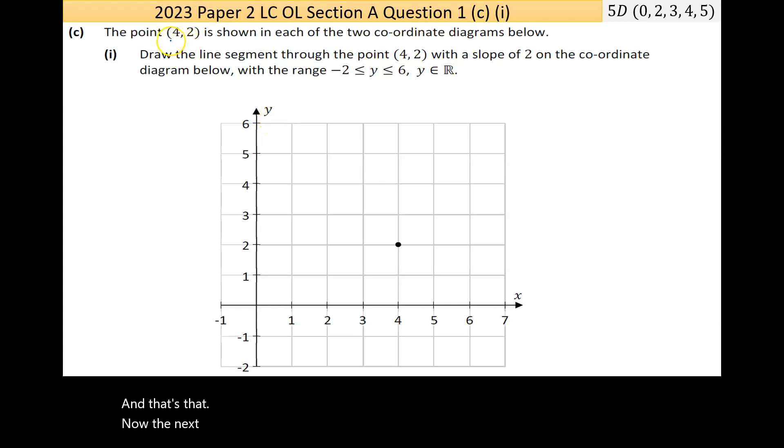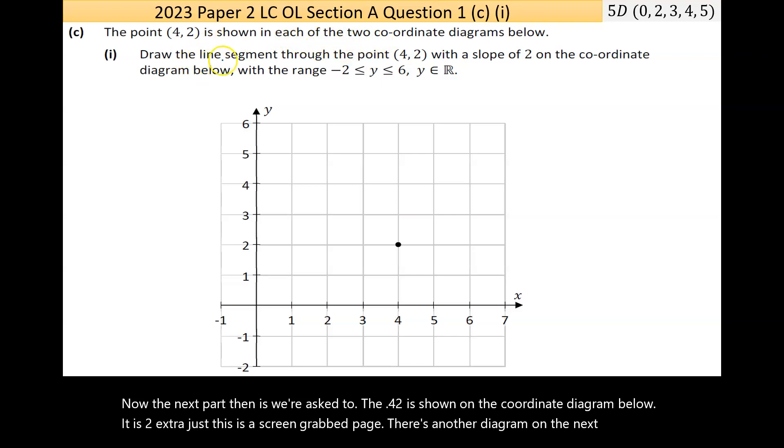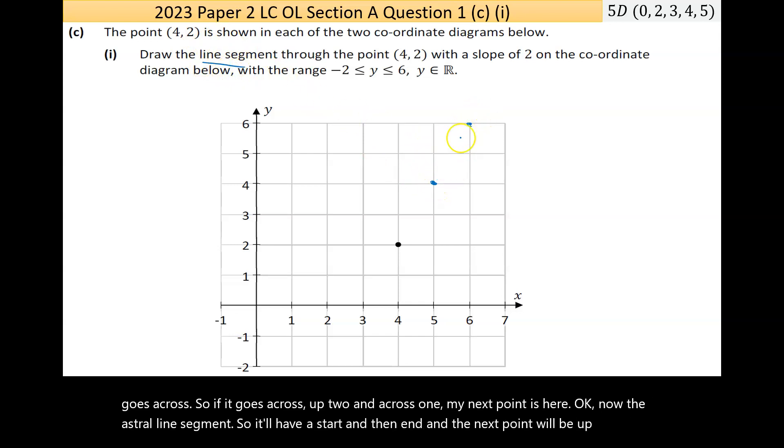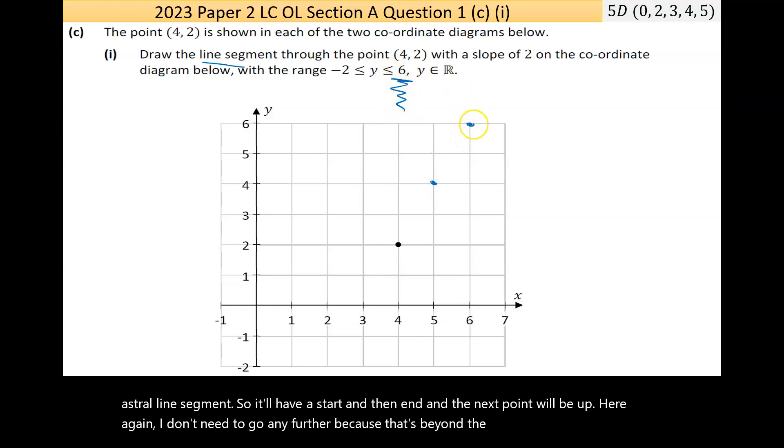The next part: the point (4, 2) is shown on the coordinate diagram below. Draw a line segment through the point (4, 2) with a slope of 2 on the coordinate diagram, with the range -2 to 6. That's the point (4, 2). With a slope of 2, it goes up two units for every one it goes across. They ask for a line segment, so it'll have a start and an end. I don't need to go any further because that's beyond the range of y equals 6.